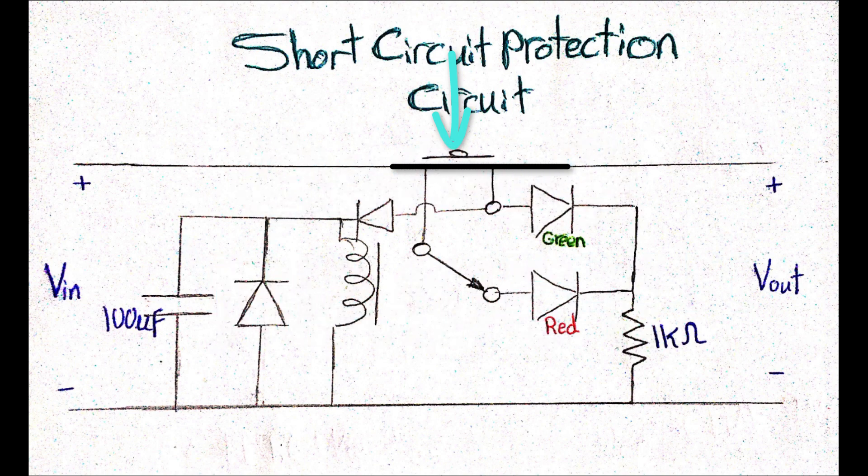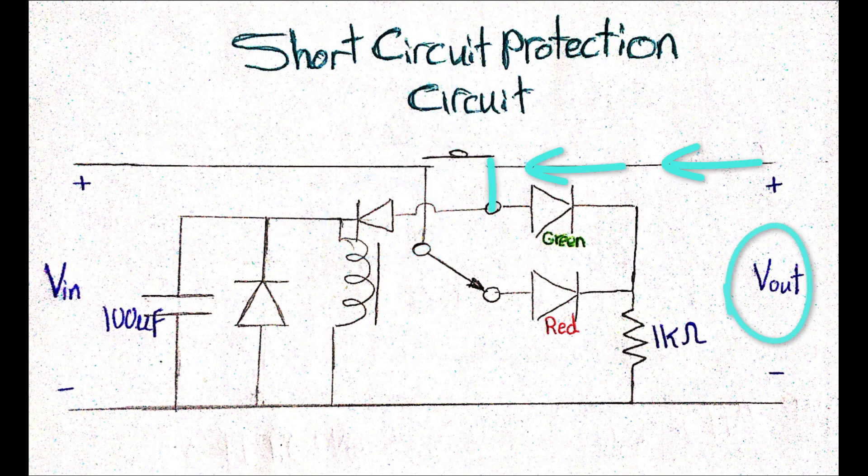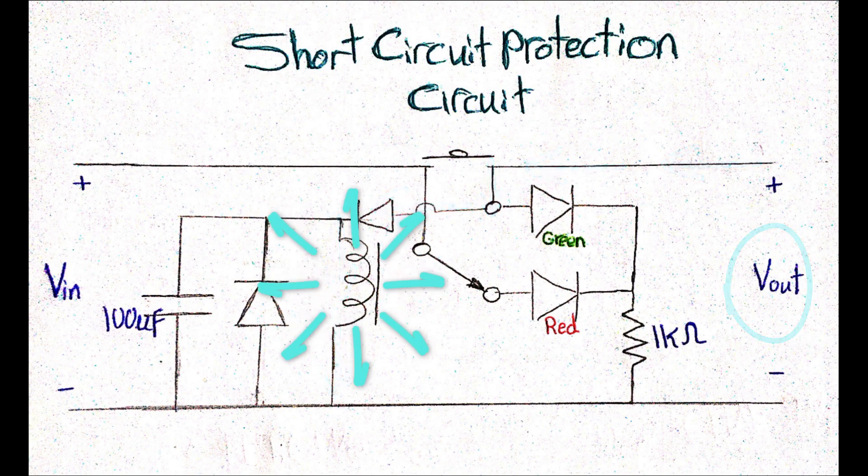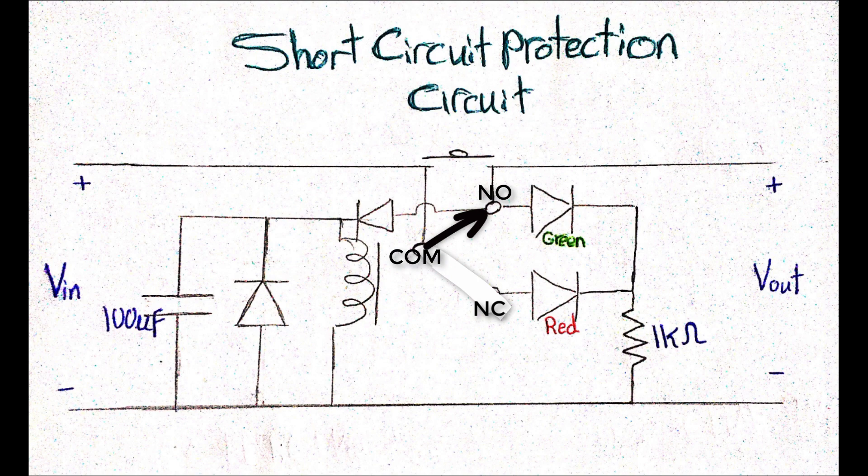Since the output terminal is connected to the relay coil through a diode, this means that once we have potential difference at the output, the relay coil will be energized, leading the relay switch to change its state, so the connection is established between the common and normally open terminals.